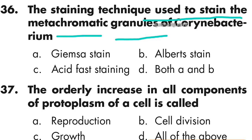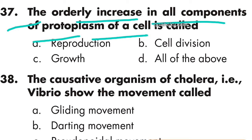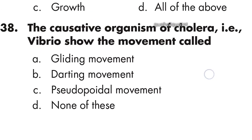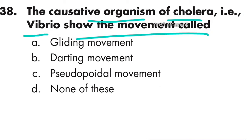Question 37: The orderly increase in all components of protoplasm of a cell is called growth — option C is correct. Question 38: The causative organism of cholera produces a movement called darting movement — option B is correct.